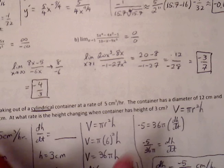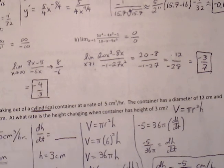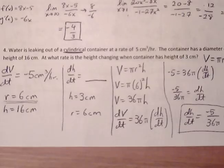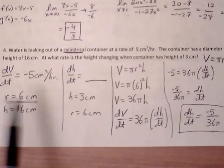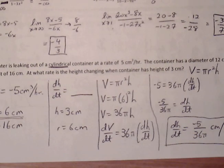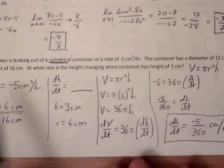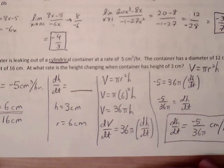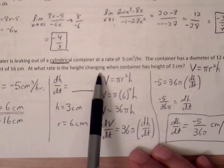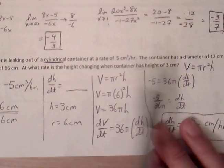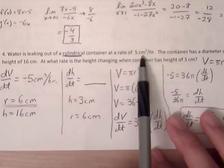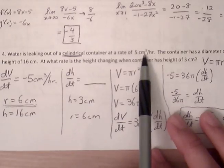Number four: we have another related rates problem dealing with volume of a cylinder. Water is leaking out of a cylinder container at a rate of 5 cubic centimeters per hour. The container has a diameter of 12 centimeters and the height of 16 centimeters. At what rate is the height changing when the container has height of 3 centimeters? So at what rate is the height changing, so we know we're looking for h but rate of change of that, so dh/dt when the container is height of 3 centimeters.